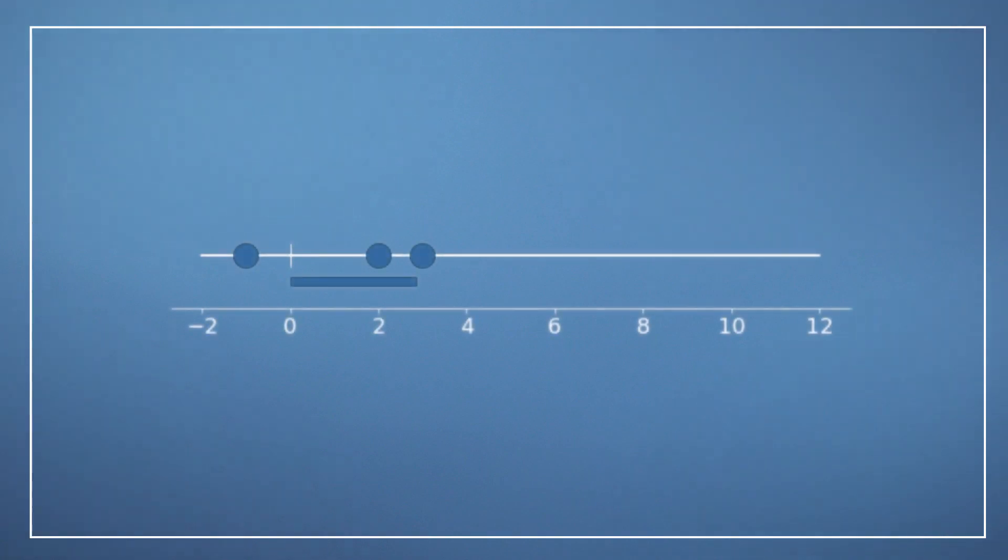Let's have a look at this data set over here. We have three data points given at minus 1, plus 2, and plus 3. And now we are shifting the data set towards the right. The variance of the data set is indicated by the blue bar at the bottom.